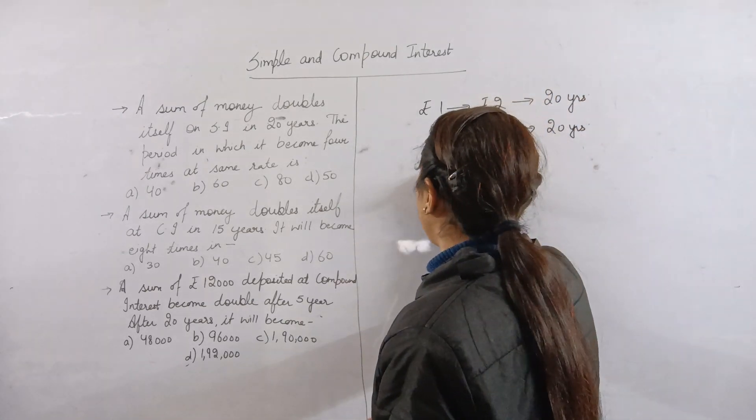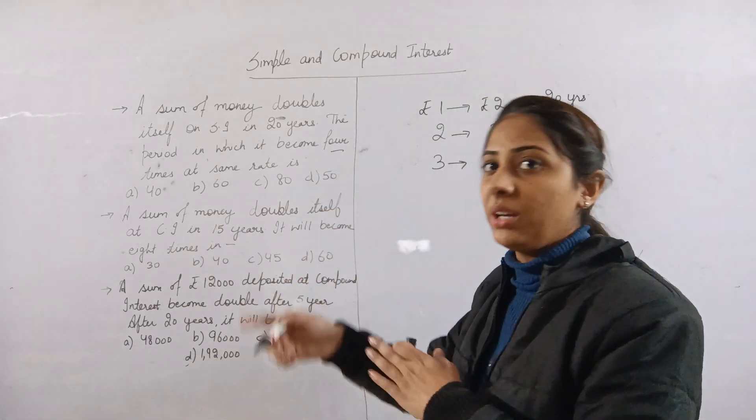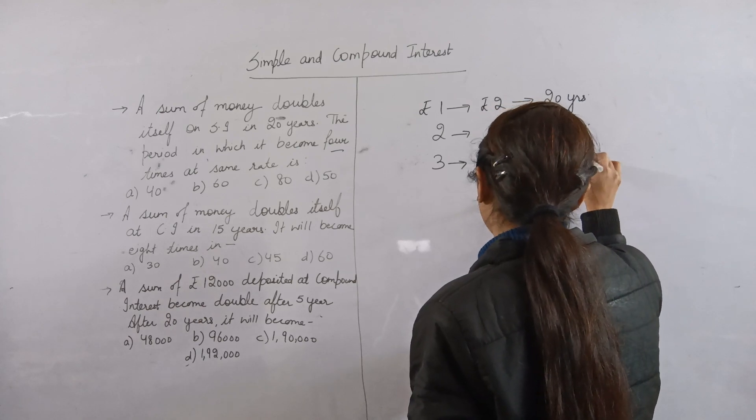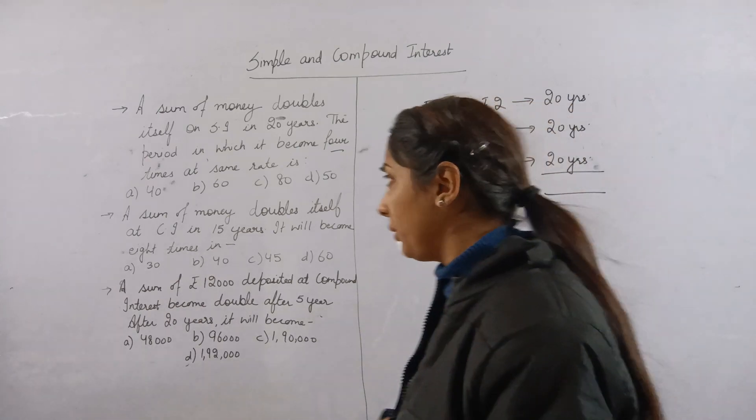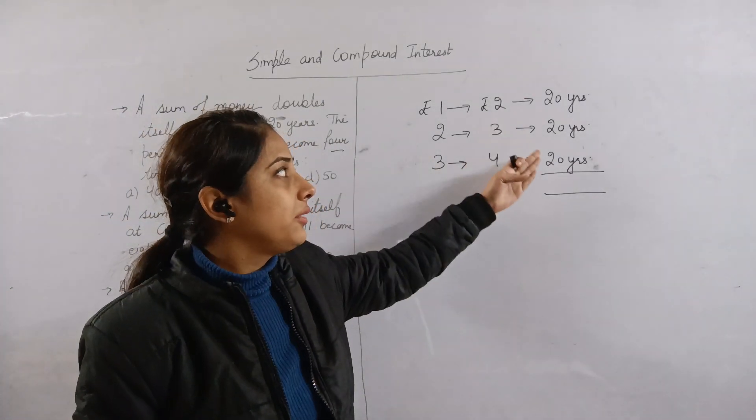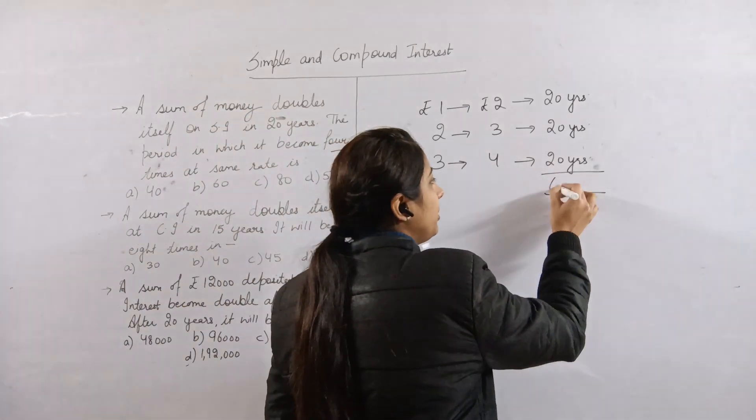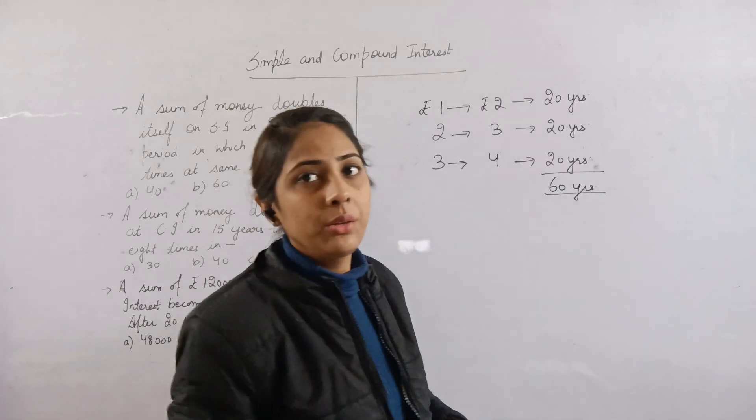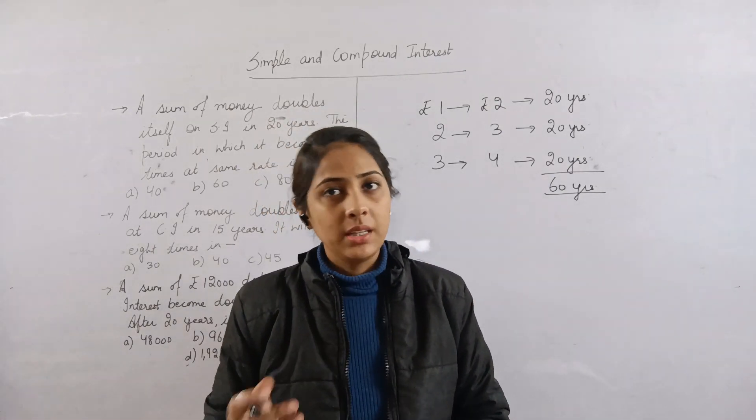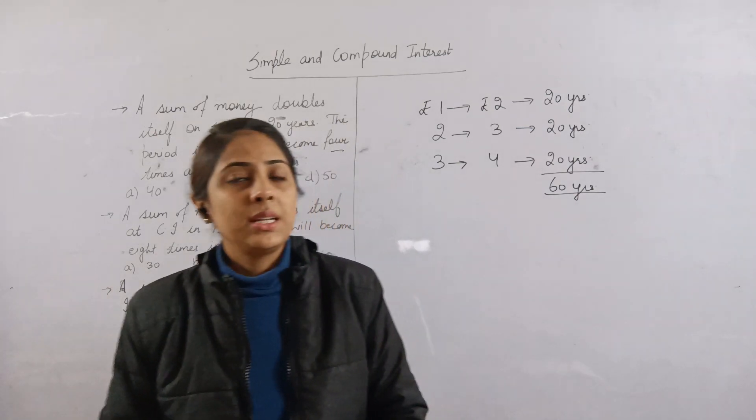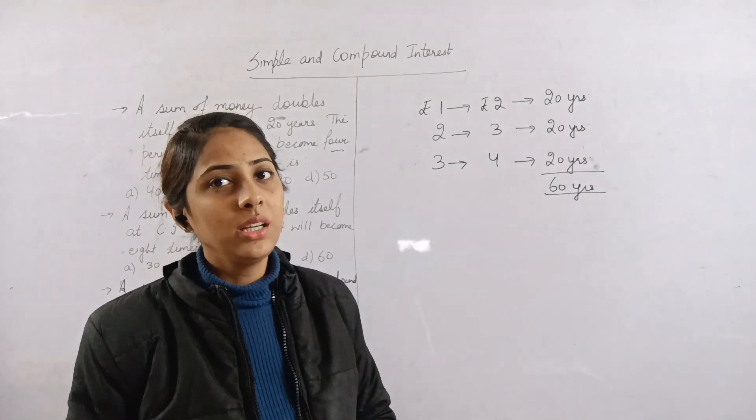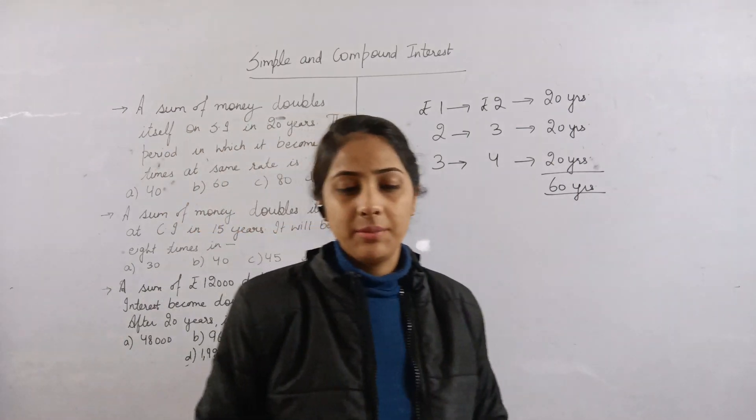In the next 20 years, another 1 rupee interest will be added, making it 3 rupees. Then in another 20 years, it becomes 4 rupees. So for 4 times the principal, which means 3 rupees interest, the total time will be 60 years. That's the answer we get using this formula.